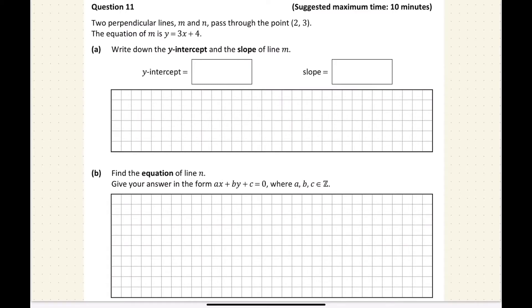The equation of m is y equals 3x plus 4. Write down the y-intercept and the slope of line m. So if you remember, y equals mx plus c. c is always the y-intercept and m is always the slope. And if you look, this formula is in that form already. So the slope is going to be 3. I'll write that in. Slope is 3.